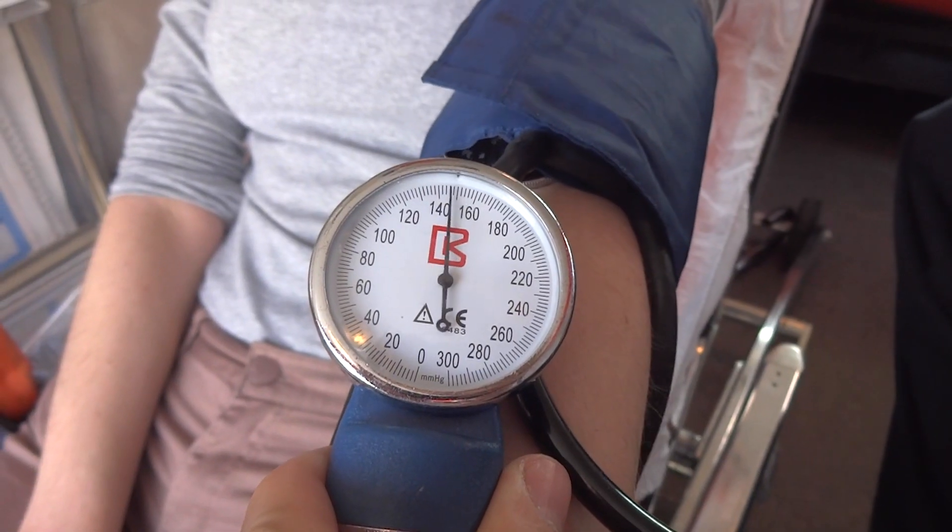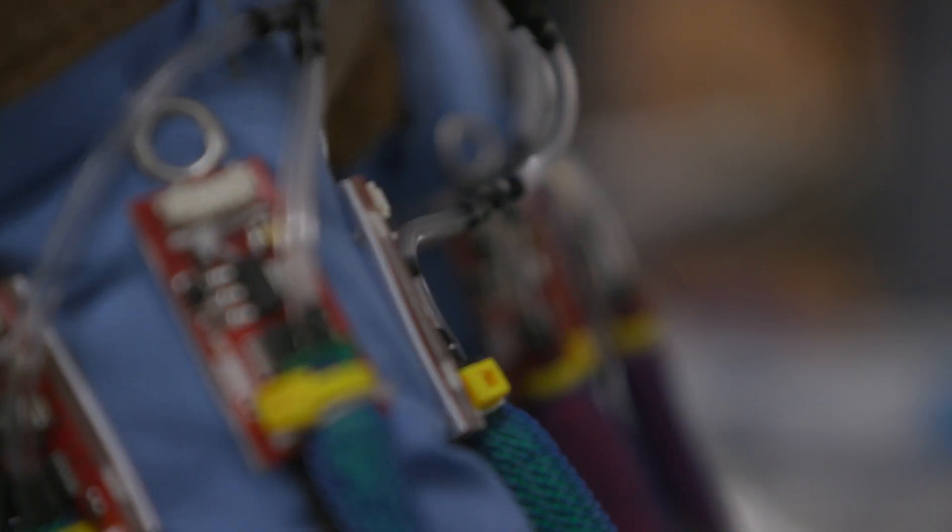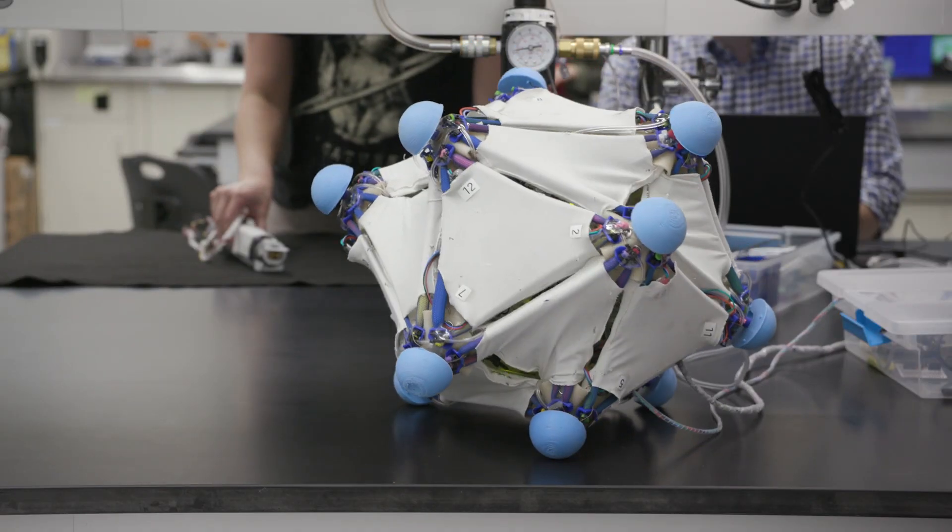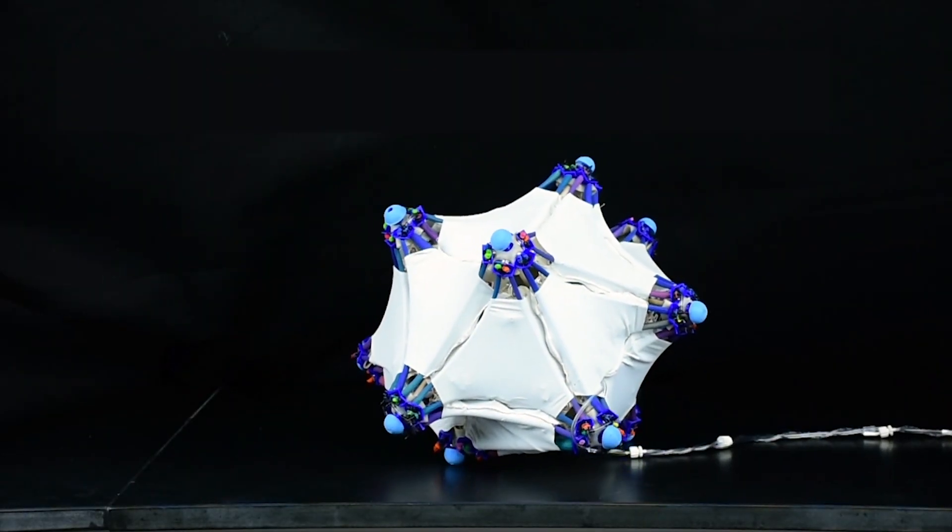But while a blood pressure cuff squeezes with the same force in all directions, the robotic skin pushes at different speeds in different places. These pushes give this frame and canvas ball or your favorite childhood toy the ability to walk, wobble, even roll.